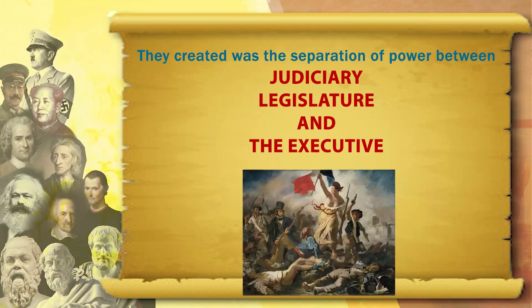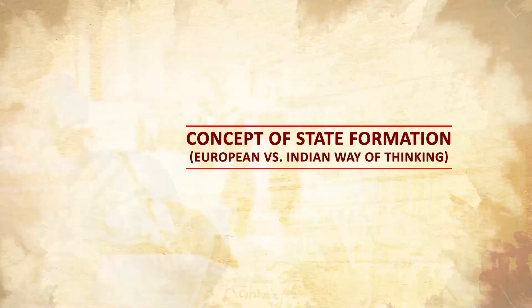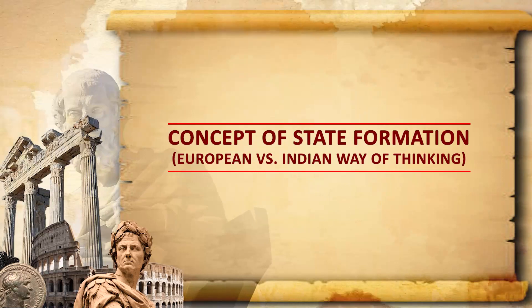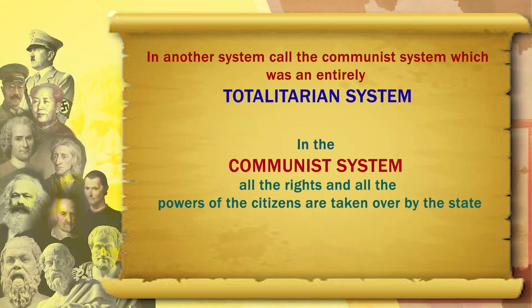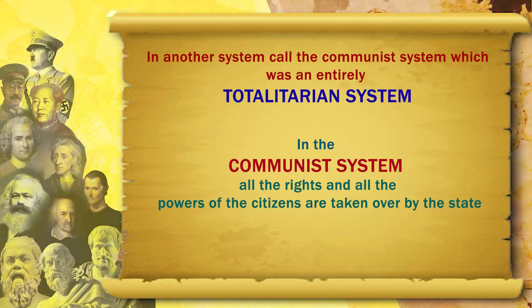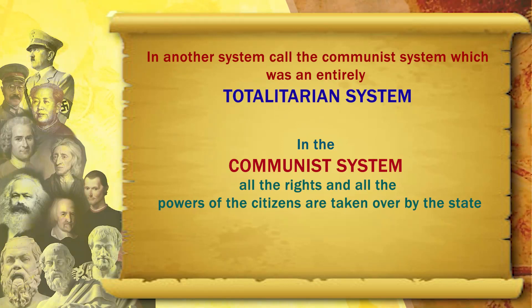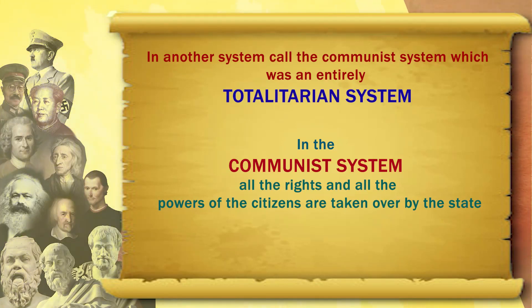This invention of the separation of powers is made after the French Revolution. In the capitalistic free world system, separation of power is done between legislature, executive, and judiciary. Another system was the communist system — an entirely totalitarian system — in which all the rights and powers of the citizens are taken over by the state, because the state believes that if it is all-powerful, then only it can ensure freedom, enjoyment, and well-being of the citizens.